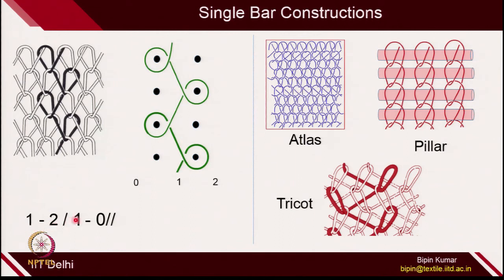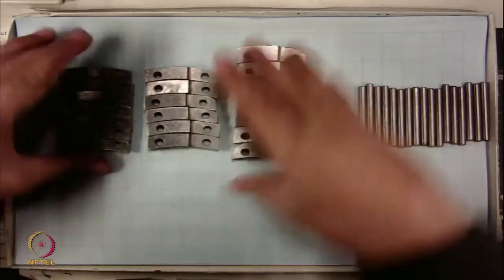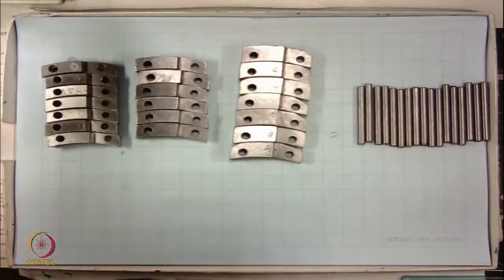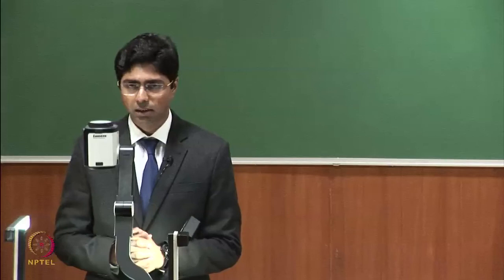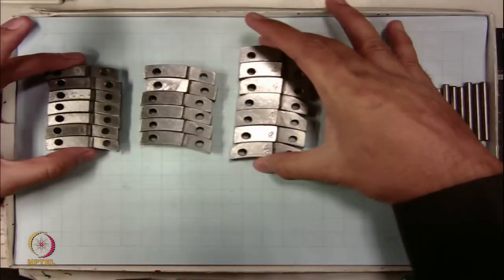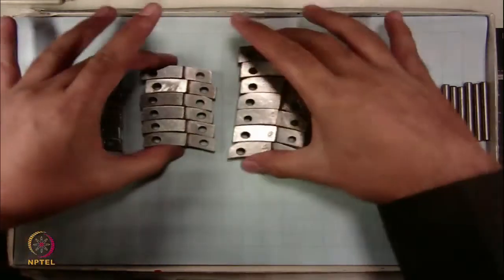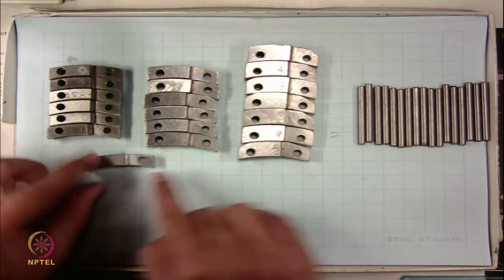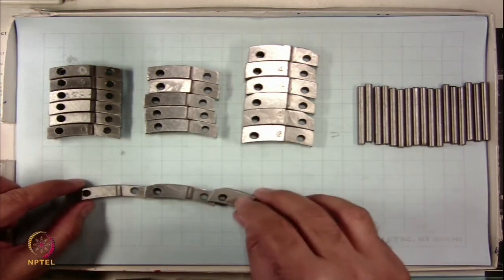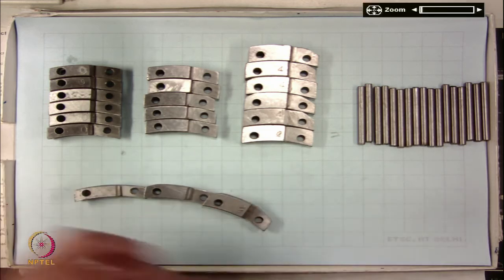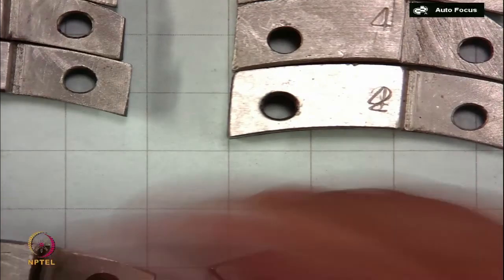For 1×1 tricot with lapping plan 1-2, 2-1, and 1-0, this is the lapping diagram and lapping plan for 1×1 tricot closed loop. Before designing any fabric, you need to know the lapping plan you want to achieve. I have used 3 different heights of links — smallest, a bit bigger, and the biggest — and you can see the height difference carefully here.